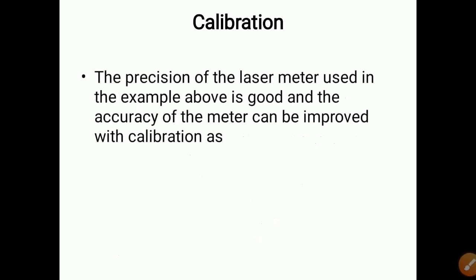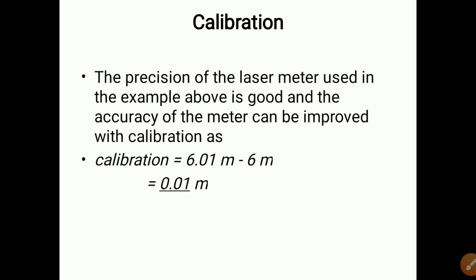What is calibration? The precision of the laser meter used in the example is good, and the accuracy of the meter can be improved with calibration — for instance, the offset is 6.01 − 6 = 0.01 meter. If you want to increase an instrument's precision or accuracy, you must recalibrate all the parameters. Every instrument has to be calibrated according to the required scale; the measured value is compared with the true value and a standard scale is prepared with minimum error.